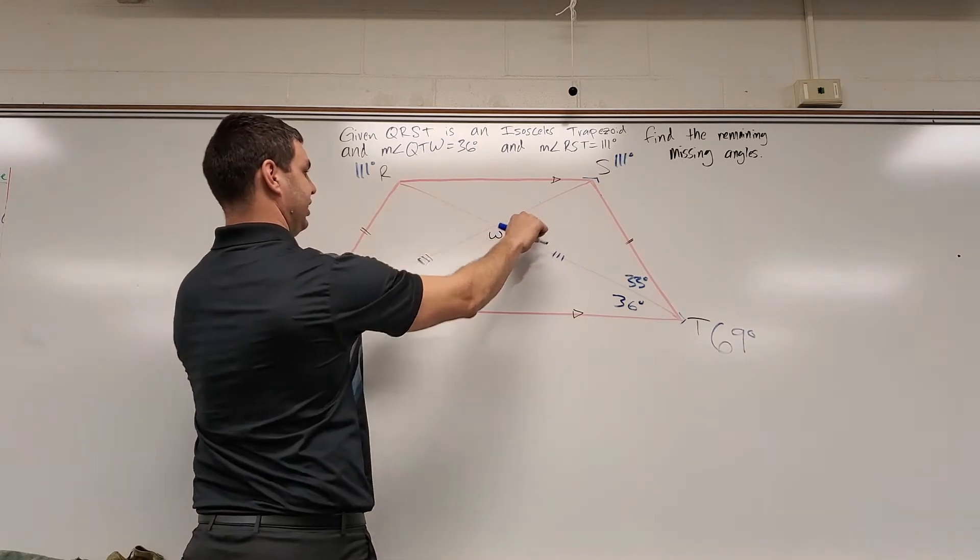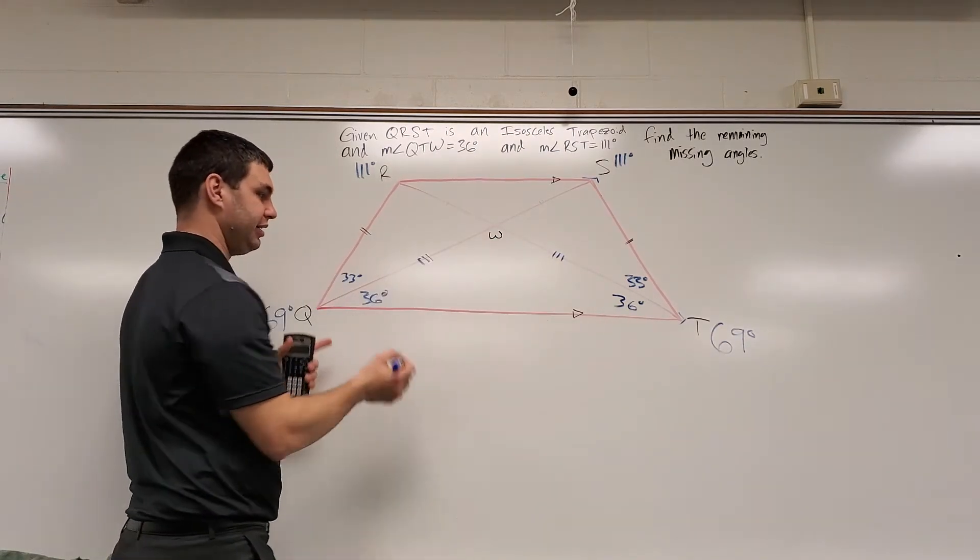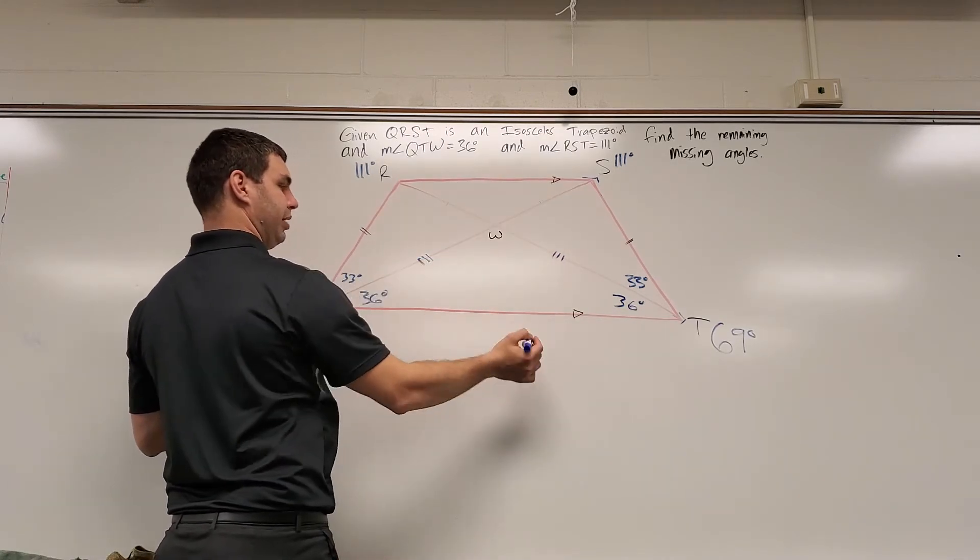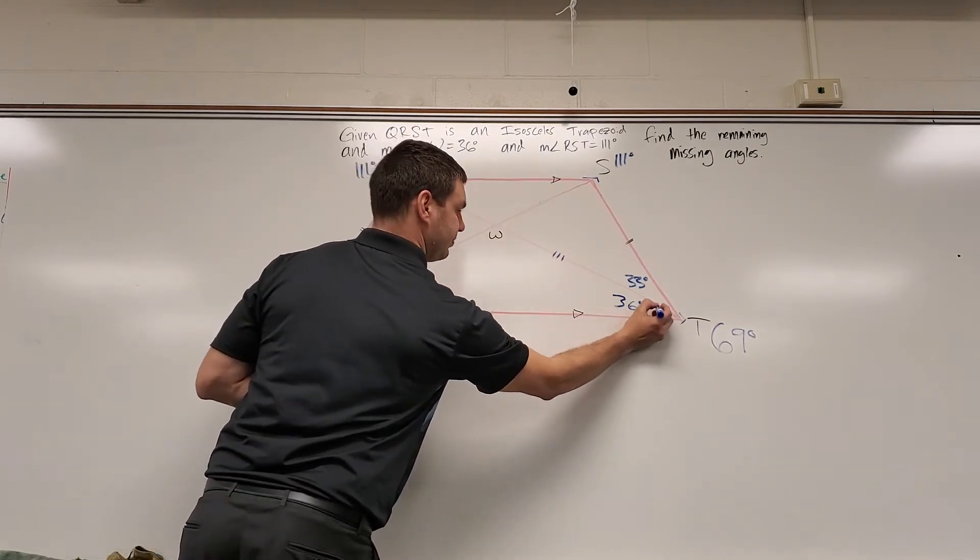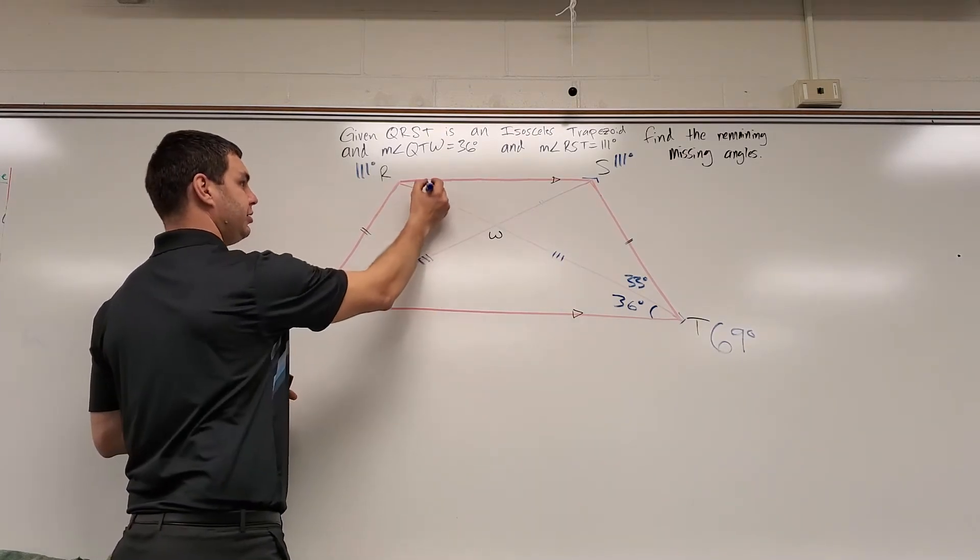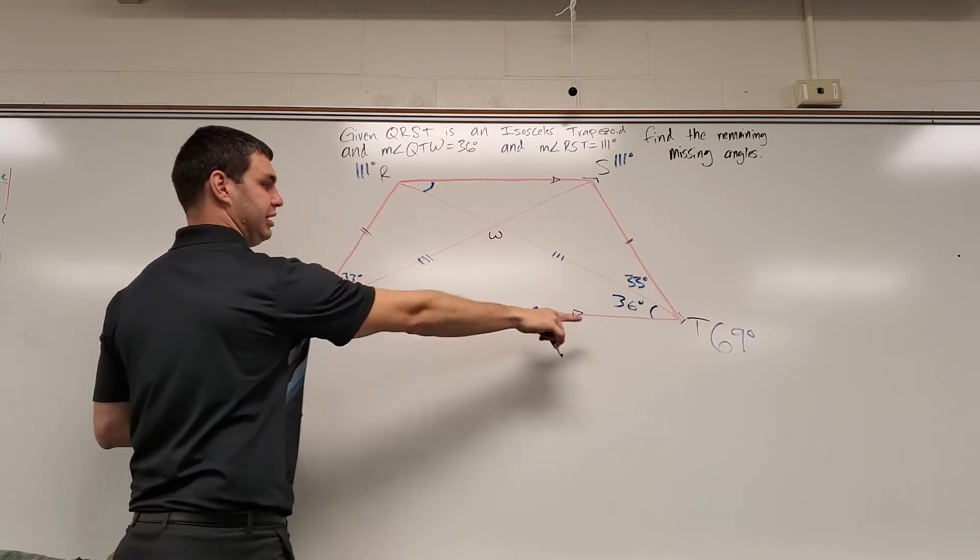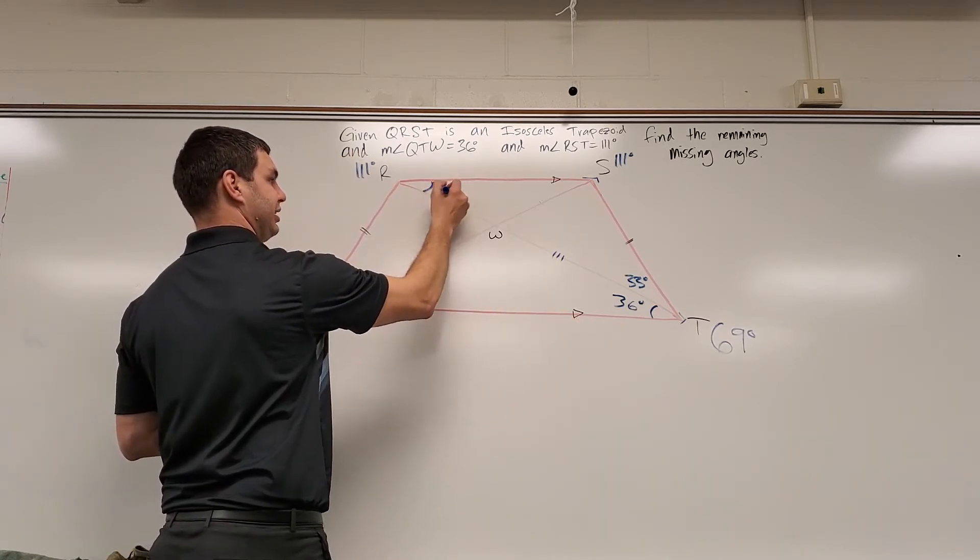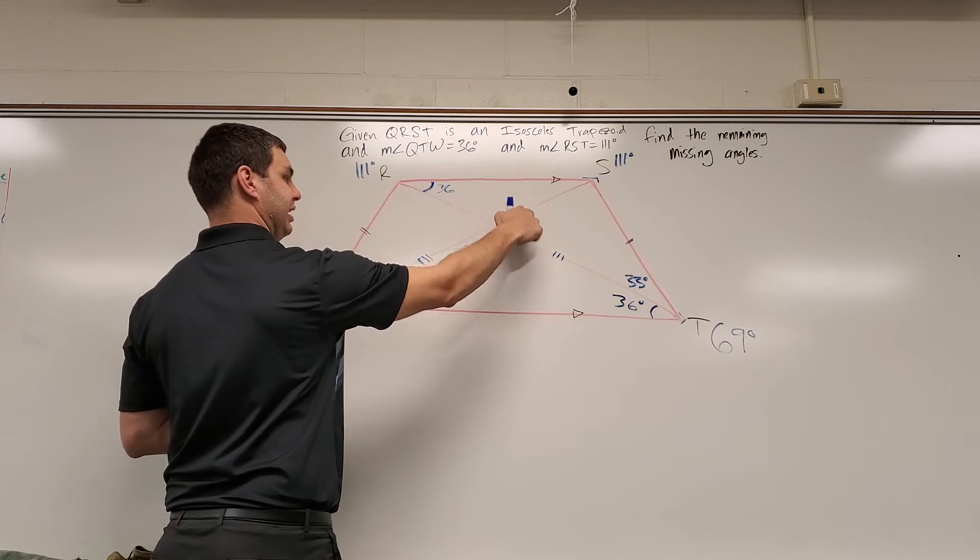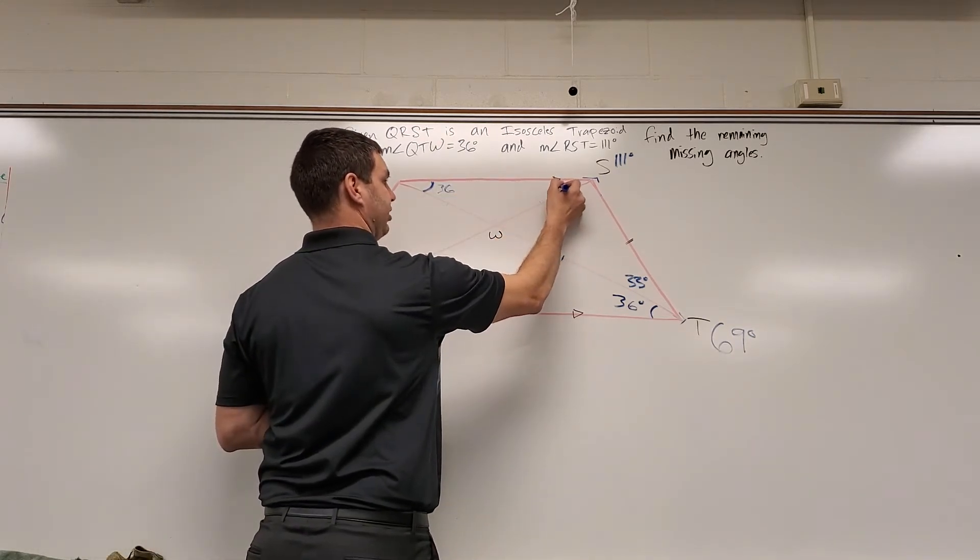I have another isosceles triangle up here that I can use information to find out. This is parallel to the top and bottom. So this angle is an alternate interior angle. If you remember your information about parallel lines and the transversal, it's an alternate interior angle to this one, which is 36. And again, since this is an isosceles triangle now, this other side has to be 36.